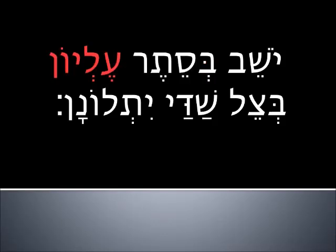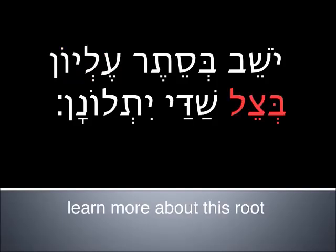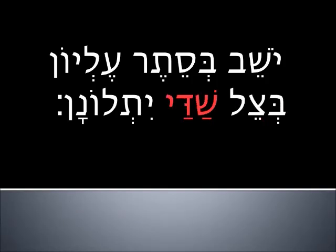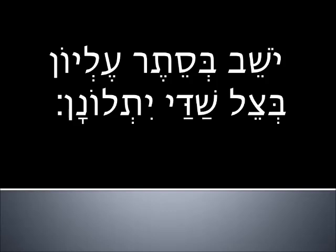Elyon comes from al, which means on. Elyon is the highest on — the highest height. Bet is the preposition in. Tzel is a shadow; there's a video about related words to shadow, linked in the description. Shaddai is usually translated as 'Almighty.' The word shed by itself can mean a demon or the breast — the almighty part comes from the baby at the breast receiving everything from his mother. Or it can be split: Shei-Dai, 'the God who is enough.' At a Passover seder you sing Dayenu — 'it is enough,' die. Yitlanan is a hitpa'el verb meaning to spend the night. 'He who dwells in the secret place of the Most High, in the shadow of the Almighty, he will abide.'